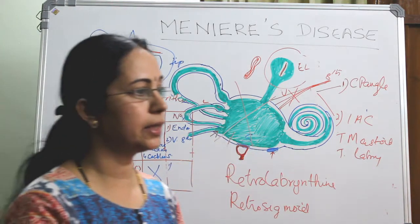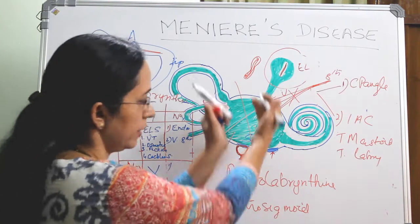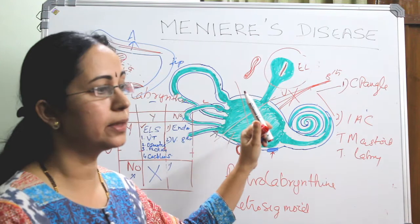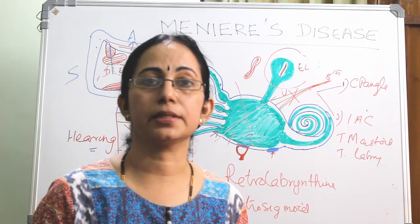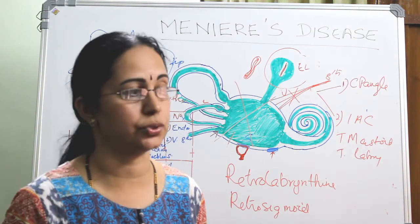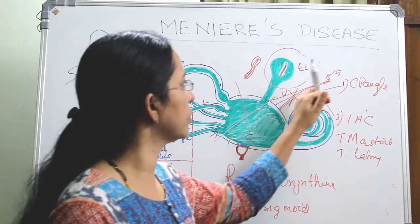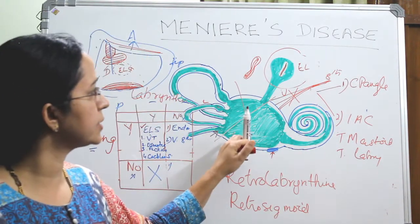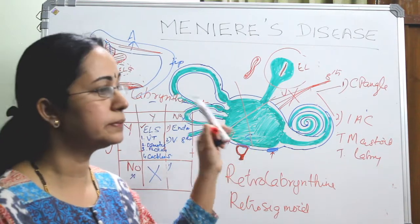In labyrinthectomy, the labyrinth is completely removed. Either we go through the external auditory canal — that is a transcanal approach — and remove and destroy the neuroepithelium. However, transcanal labyrinthectomy is never complete; there is a chance that vertigo can recur because we cannot remove the entire neuroepithelium through a transcanal approach. The preferred approach is transmastoid.